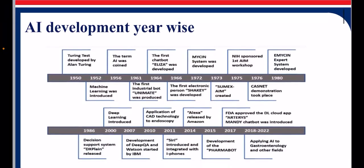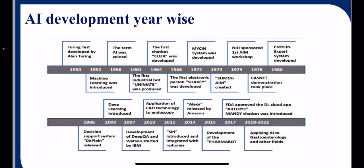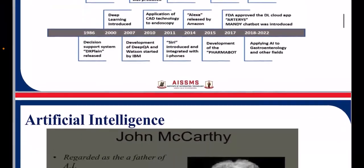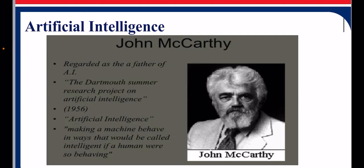This is how AI got developed year-wise from 1950 till date. The major development occurs after 2010. John McCarthy is the father of AI. His definition: making a machine behave in a way that it would be called intelligent if a human were so behaving. So we are developing a machine that mimics human behavior.